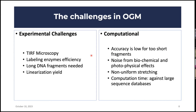On the computational side — the main focus of my research — accuracy for OGM before our advancements is too low for short DNA fragments. Noise from biochemical and photophysical effects like enzyme labeling efficiency, fluorophore interactions between neighboring fluorophores, and non-uniform stretching of DNA molecules are not accounted for in existing algorithms, reducing accuracy. Computation time is also significant, especially when imaging a large volume of DNA and mapping against all known organism genome sequences.